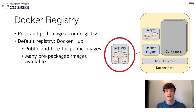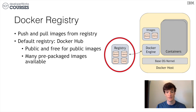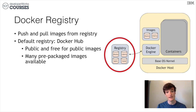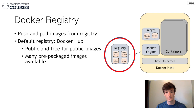The cool thing about Docker Hub is that there are lots of images to choose from. For example, in Lab 1 we ran Ubuntu, Nginx, and MongoDB containers that are prepackaged for us on Docker Hub. Pretty much every major application or database you can think of has a corresponding image on Docker Hub.